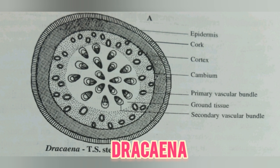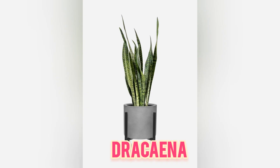As a result, a second row of vascular bundles is formed, alternating in position with the first ring. Similarly, the activity and position of vascular bundles keep on changing, with the result that vascular bundles are arranged in concentric rings.